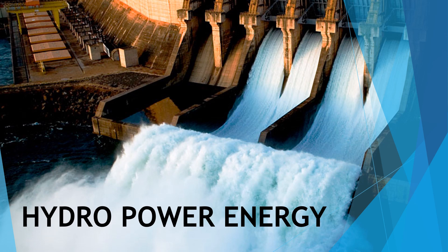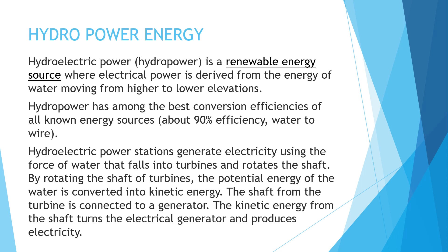Next let's see hydropower energy. Hydroelectric power, also known as hydropower, is a renewable source of energy where electrical power is derived from water moving from higher to lower elevations. Hydropower has among the best conversion efficiencies of all known energy sources — about 90% efficiency. Hydroelectric power stations generate electricity using the force of water that falls into turbines and rotates the shaft, converting potential energy into kinetic energy. The shaft from the turbine is connected to a generator, which produces electricity.